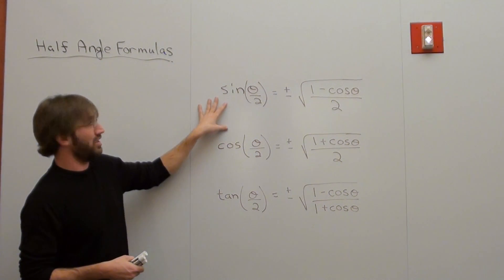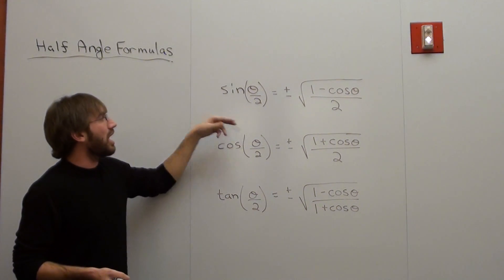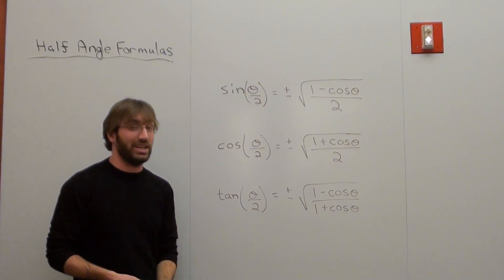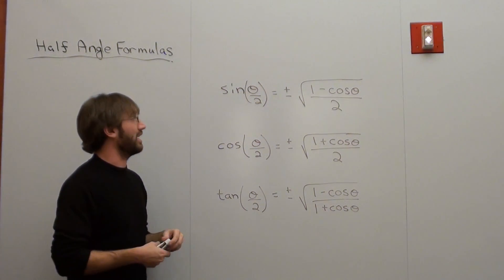So basically what I want to do is I'm going to use this one right here, the first one: sine of theta over 2. And what I'm basically trying to do is I'm trying to find the sine of 90 degrees. The sine of 90 degrees is 1. I can prove that it's 1, actually. See if you figure this out.